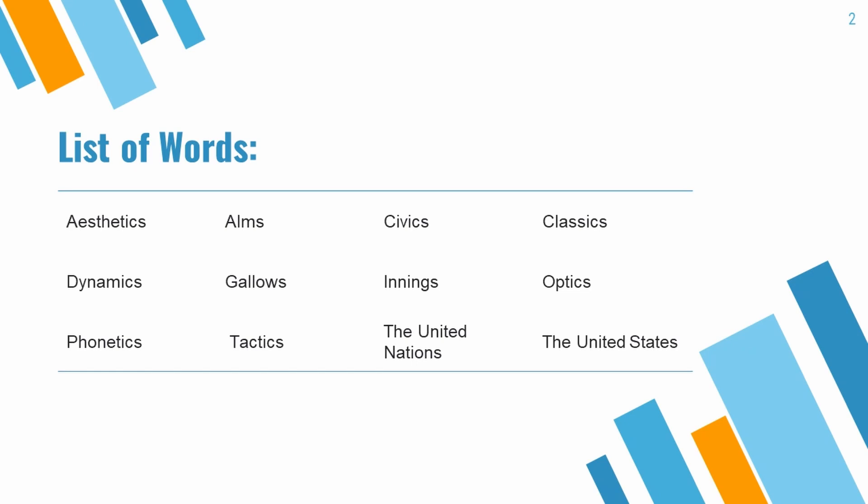Kuch aur words hain jaise aesthetics, arms, civics, classics, dynamics, gallows, innings, optics, phonetics, tactics, the United Nations, the United States — yeh sare words dekhne mein plural hain lekin unka maani singular hai. Yahan bhi hamare paas ek exception hai: kuch words aise hain jo kisi special case mein plural ho sakte hain. Jaise lafz 'means' — 'Every means has been tried' — yahan means ko singular ke taur par treat kiya. Lekin 'All possible means have been tried' —